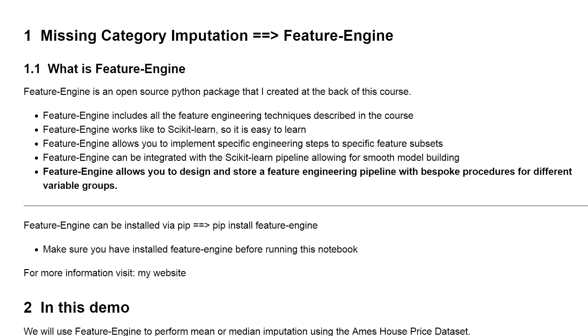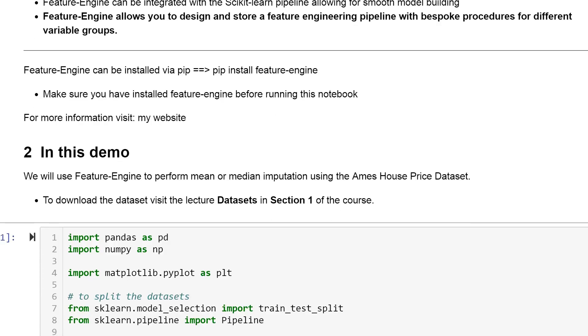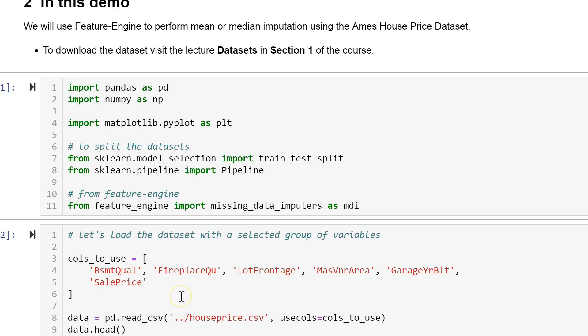If you remember, missing category imputation consists in replacing missing data in categorical variables by the string 'missing'. To do this,